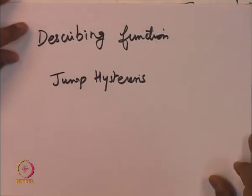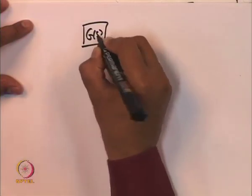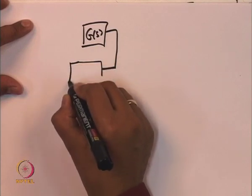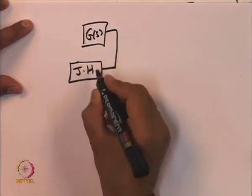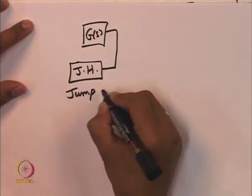While doing this, we should note that the transfer function to which we connect should have some low pass characteristics. This we described only briefly in our previous lecture. Note that this describing function method is an approximation method.